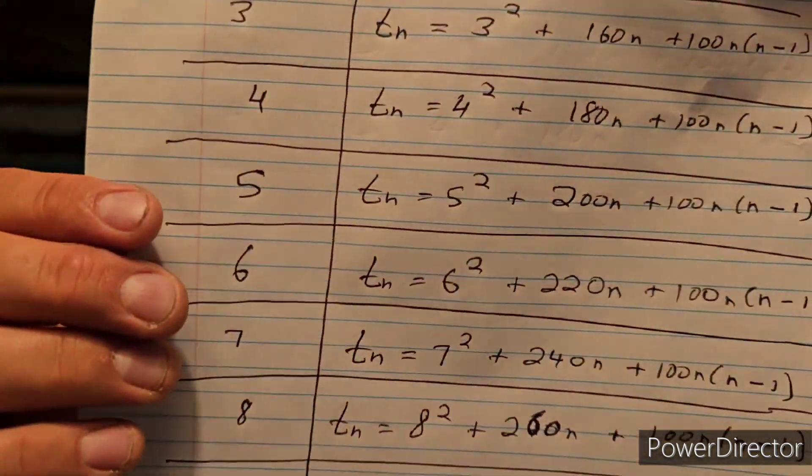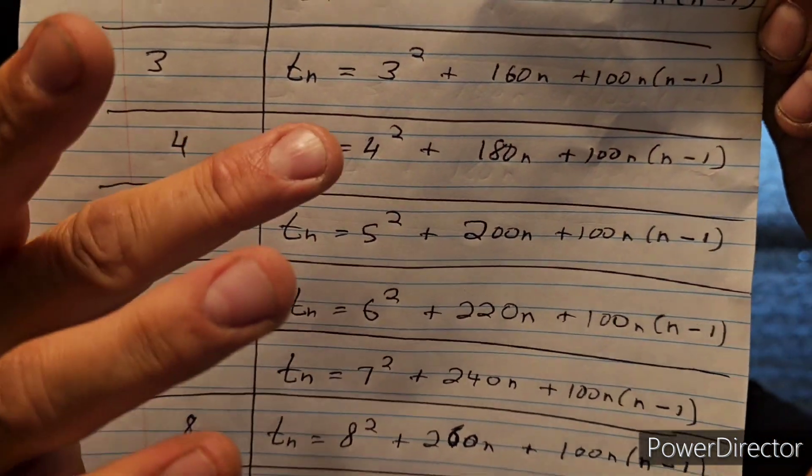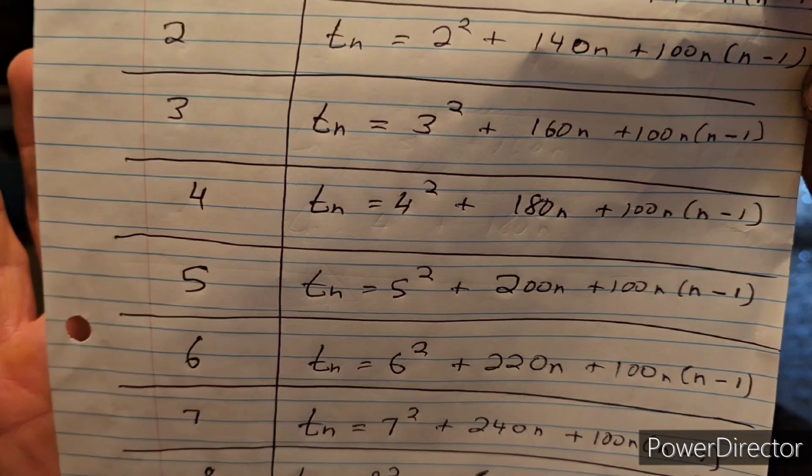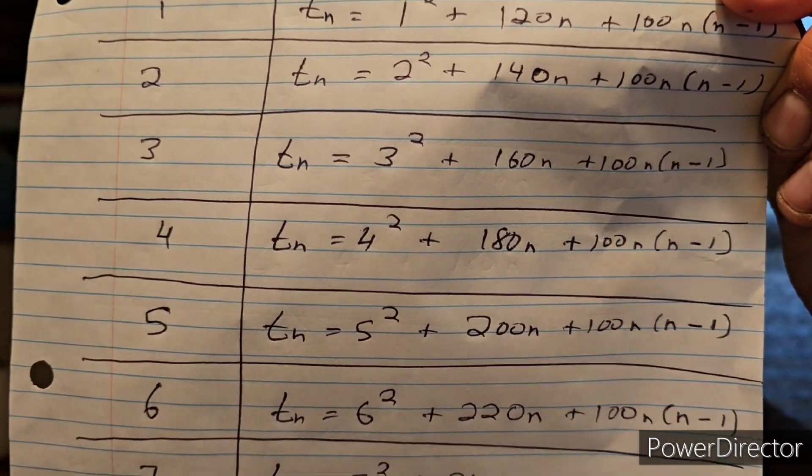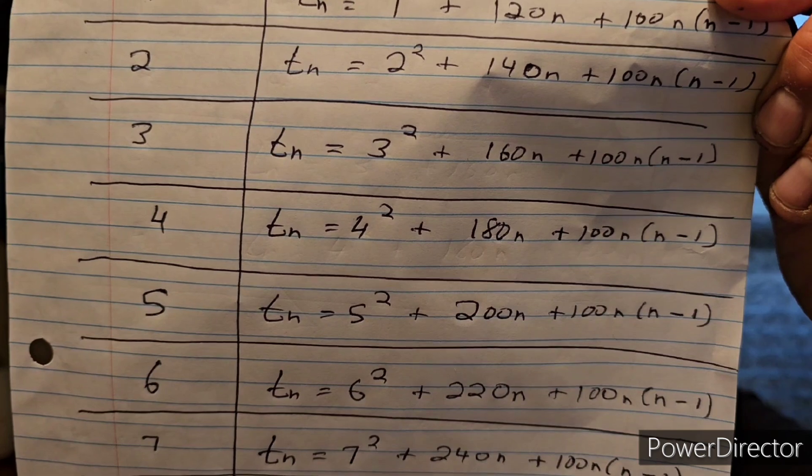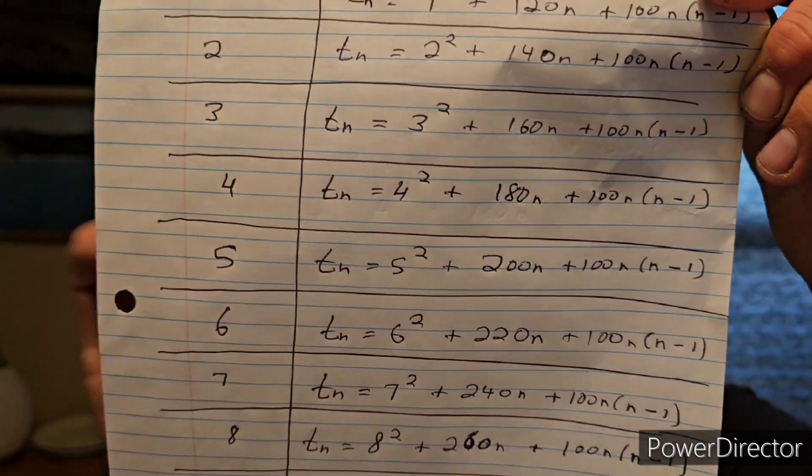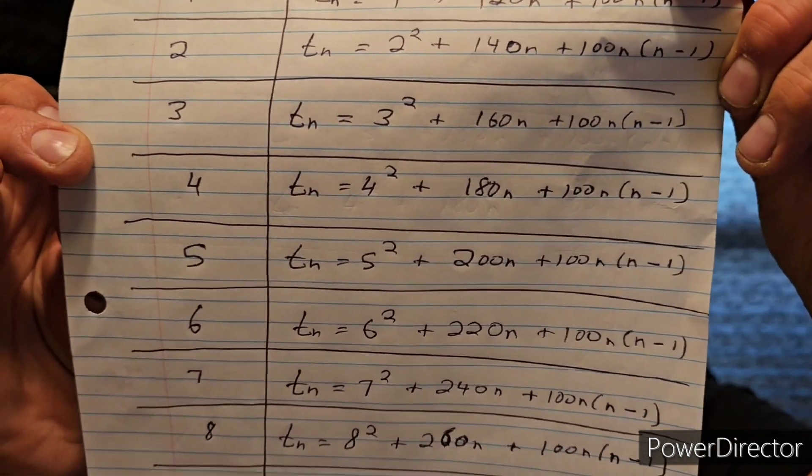Now, let's do a number ending in 4. Let's do 34. So if it ends in 4, that means you have to put in this one here, be T3. So 16 plus 3 times 180, 540 plus 3 times 2, 600 plus 540 is 1140 plus 16. And you guessed it. That is 1156, 34 squared.